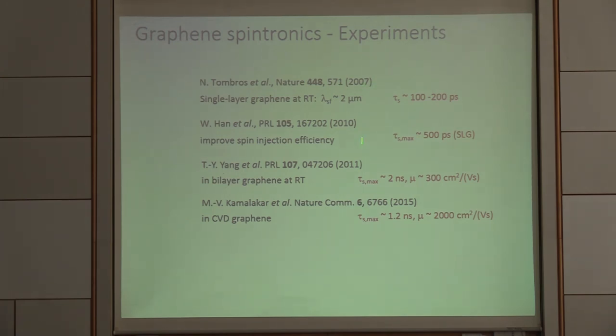But I think what happened then with progressing, by improving spin injection efficiency, one already had half a nanosecond. And then in 2011, on bilayer, there were values around 2 nanoseconds. I also put up here now first work on CVD graphene, also exceeding 1 nanosecond.